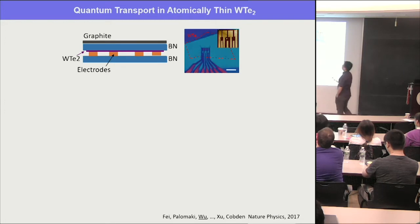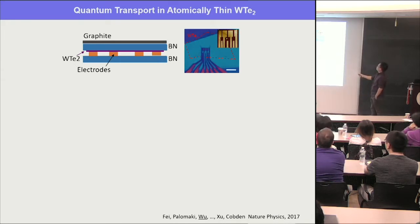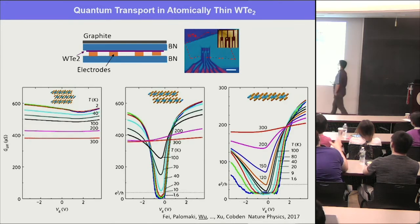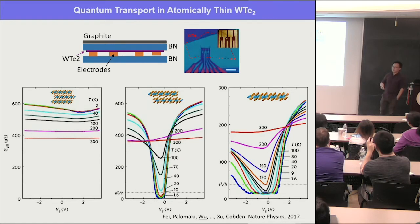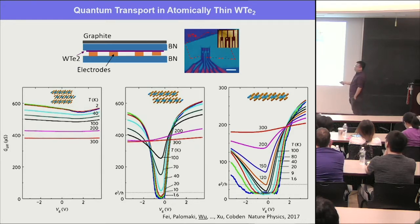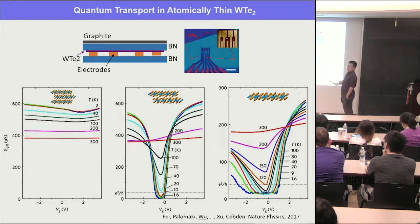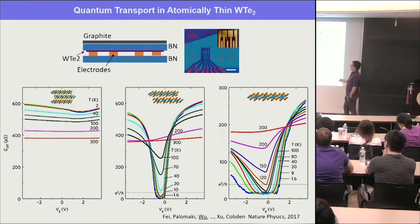The device we made is a van der Waals stack structure with graphite as a gate. The BN protects the crystal, and you make contacts to the crystal. This is the side view and top view, with multiple probes. The data shows devices made from trilayer, bilayer, and monolayer. This illustrates the beauty of 2D crystals: once you go from bulk to 2D, many things change. Bulk WTe2 is a semi-metal. The trilayer is also a semi-metal — the conductance does not change much with gate, and as you reduce temperature the conductance increases, indicating metallic phase.